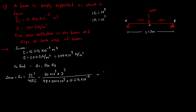After calculation, you should get 5.4 × 10⁻³. Since all values were taken in SI units, the deflection also comes in SI units, i.e., meters. Converting to mm: since 1 m = 10³ mm, multiplying by 10³ gives 5.4 mm (the 10⁻³ and 10³ cancel).